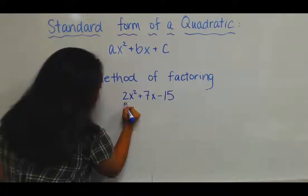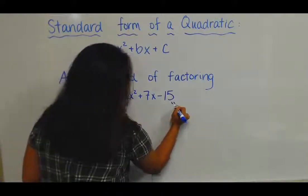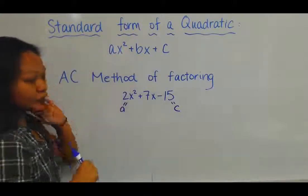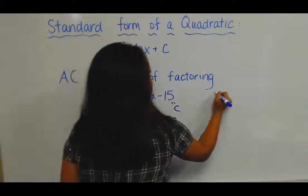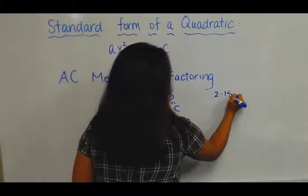So your leading coefficient is a, and the last term is c. You would multiply those two terms, so you get 2 times 15 equals 30.